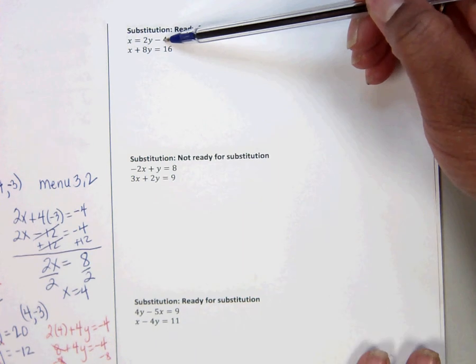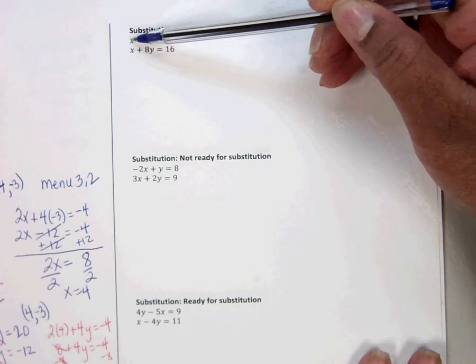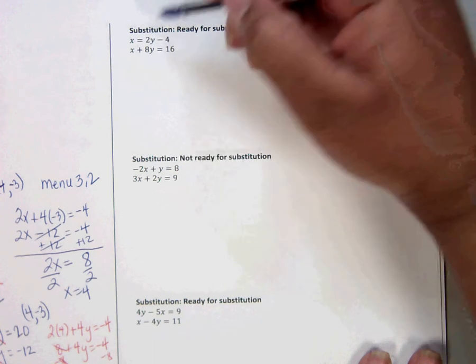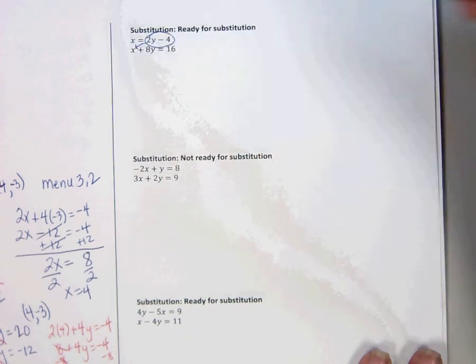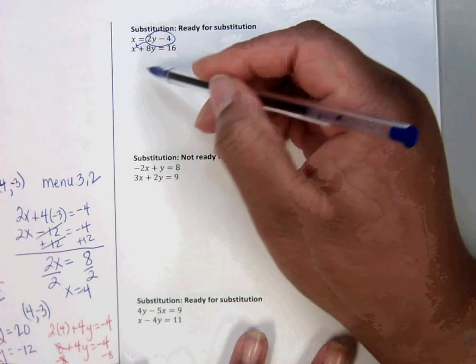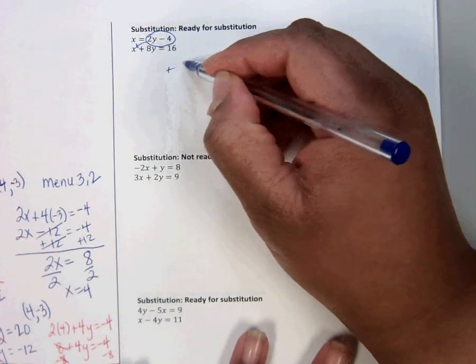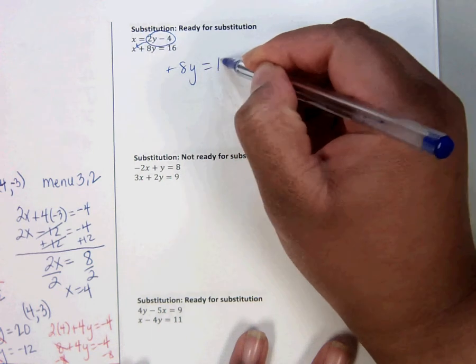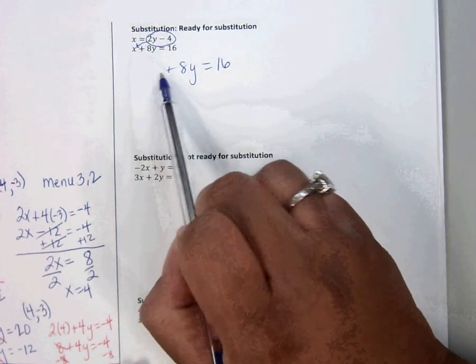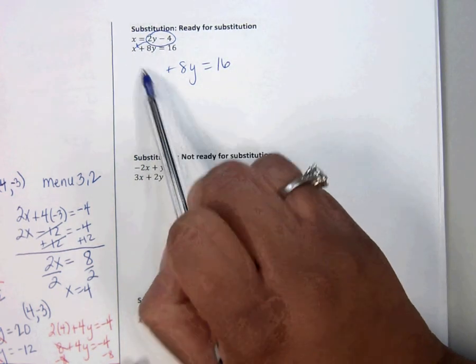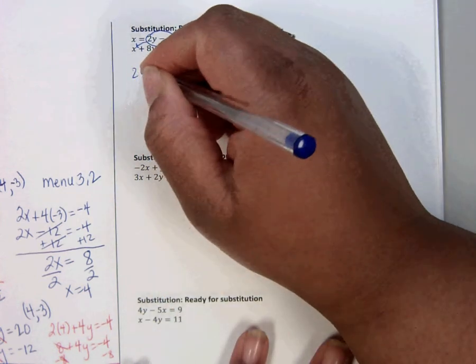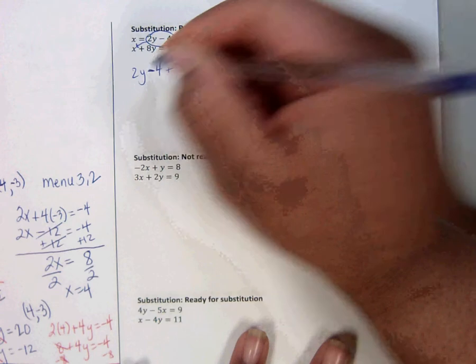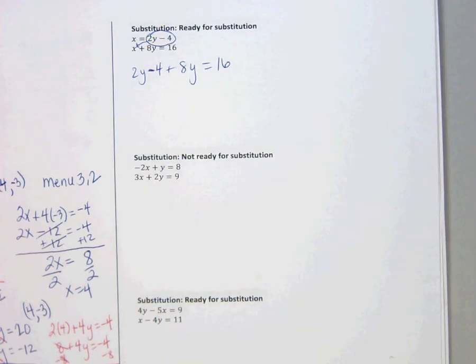So we still plug everything in the x spot because it says x equals. But what goes inside of that spot is not going to be just a number. So we're going to leave a big space, plus 8y equals 16. And in the x spot, we'll go with x equals 2y minus 4.